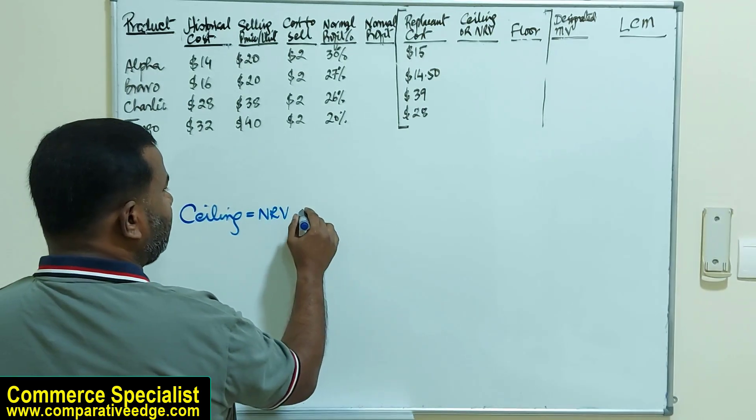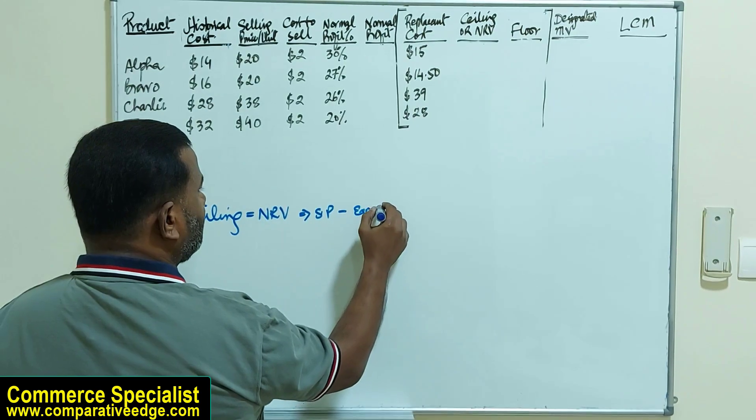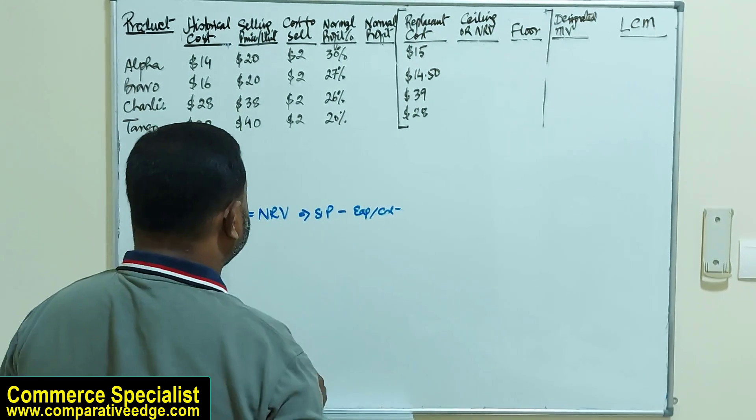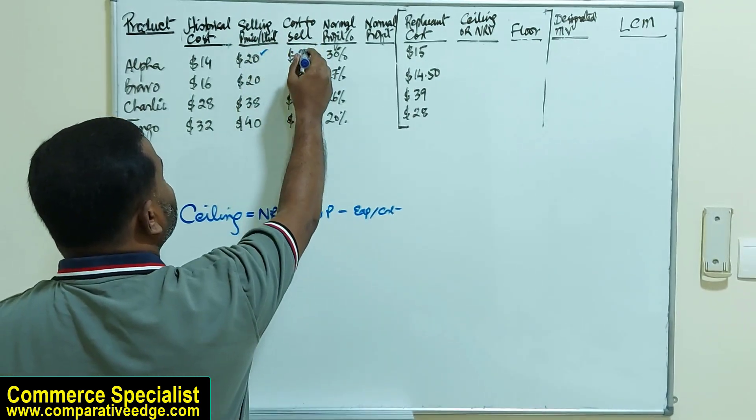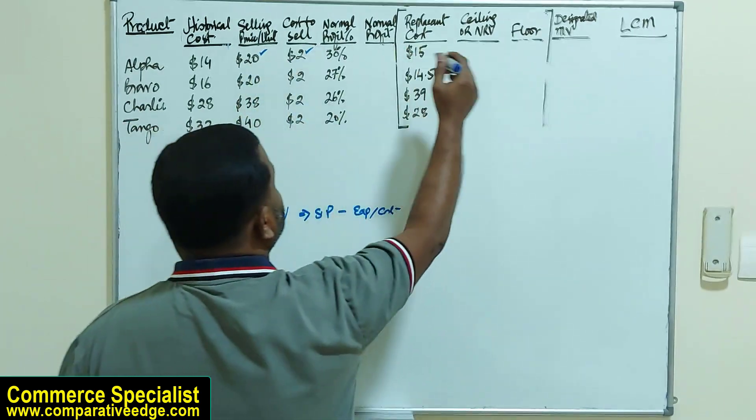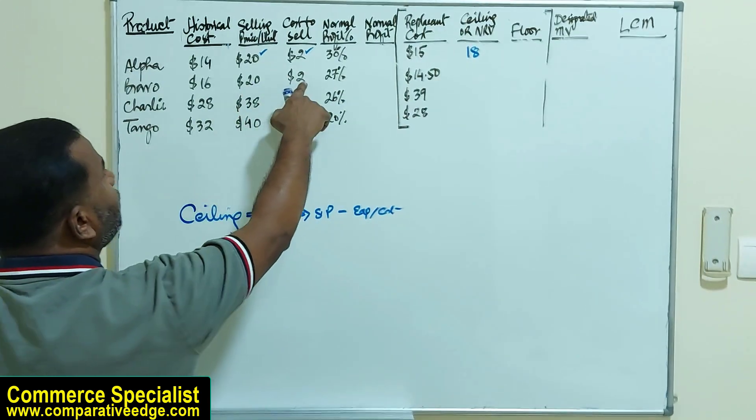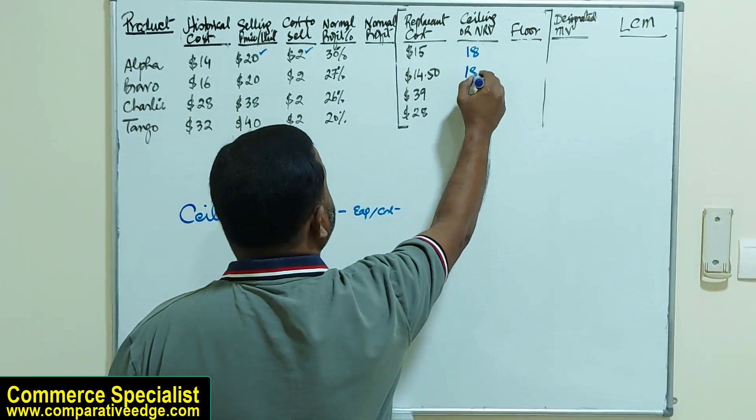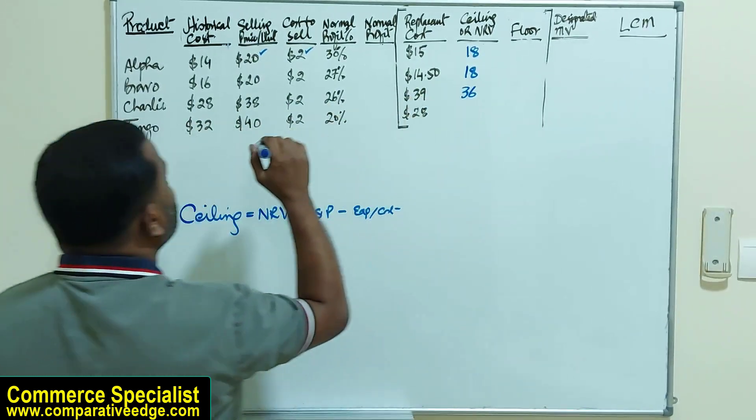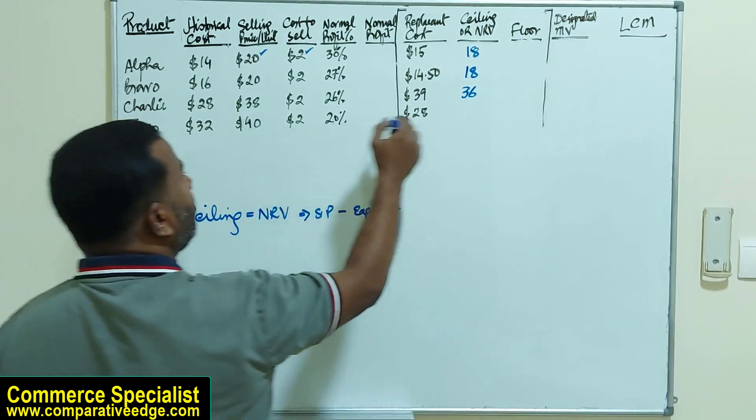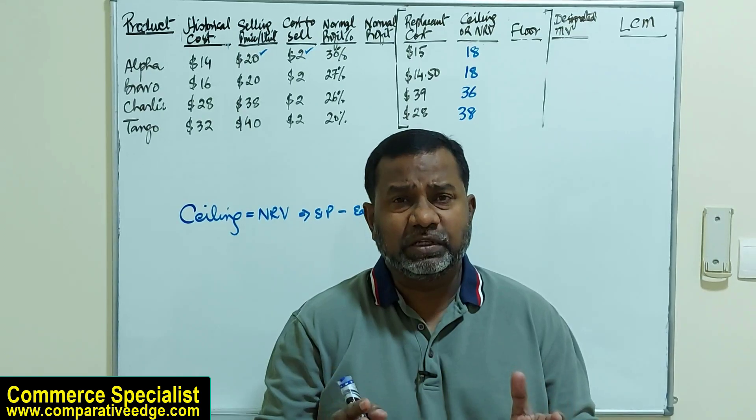Ceiling is actually net realizable value, which is basically selling price minus expenses and cost necessary to sell. We have selling prices and cost necessary to sell. So $20 minus $2 gives a ceiling of $18. $20 minus $2 again gives a ceiling of $18. $38 minus $2 gives a ceiling of $36, and $40 minus $2 gives a ceiling of $38.